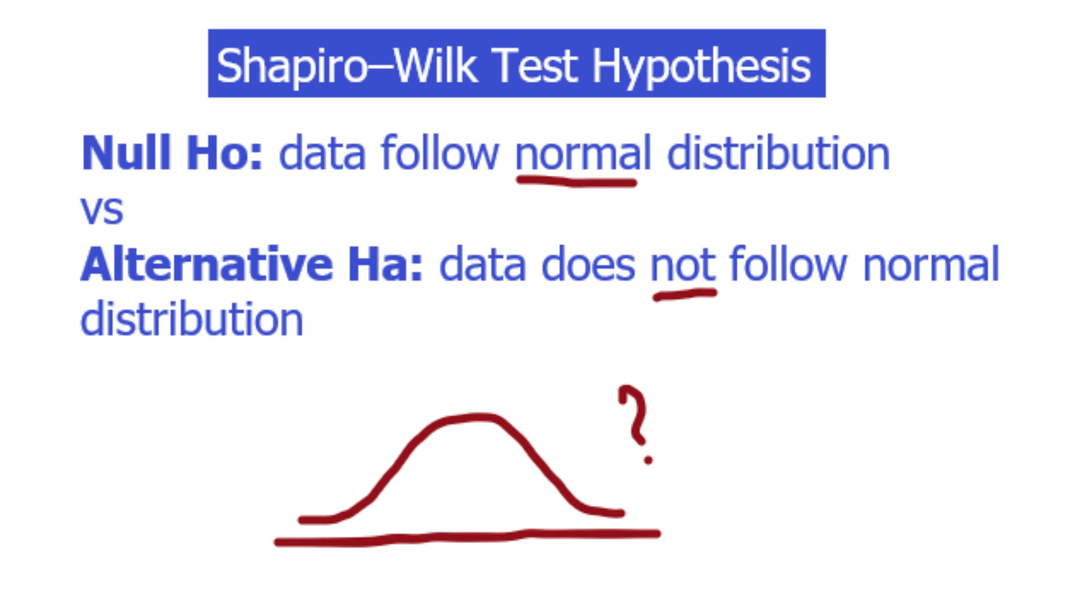Discuss about the hypothesis. Null hypothesis is that the data came from a normal population. Against alternative, the data has not come from a normal population.